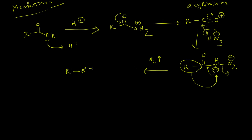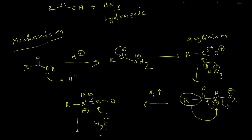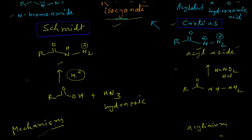The alkyl group migrates to the nitrogen atom, and nitrogen eventually leaves the system, thereby forming the protonated isocyanate. This then undergoes attack by a water molecule to produce the corresponding carbamic acid, which degrades to produce the amine — which has one carbon less than the starting carboxylic acid. The main advantage of this reaction is that it requires only one step to synthesize the required starting material for the rearrangement.